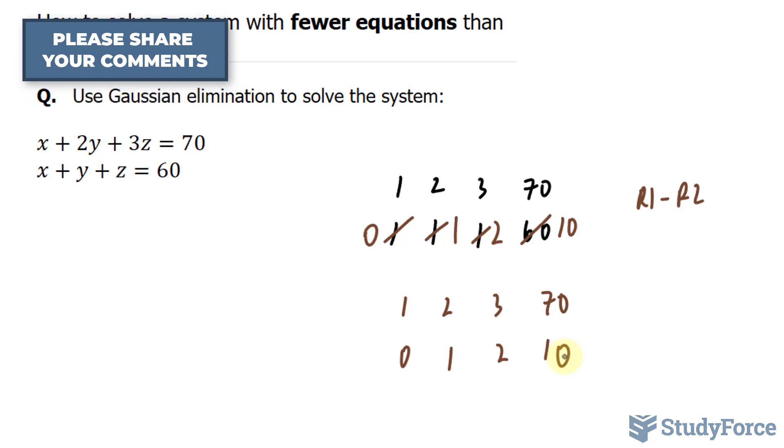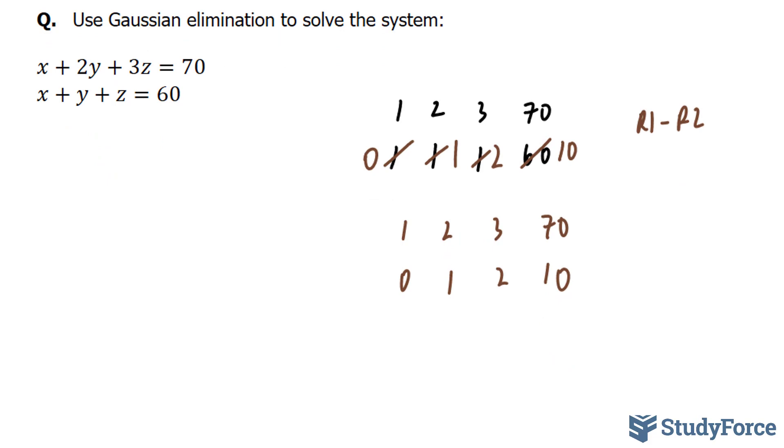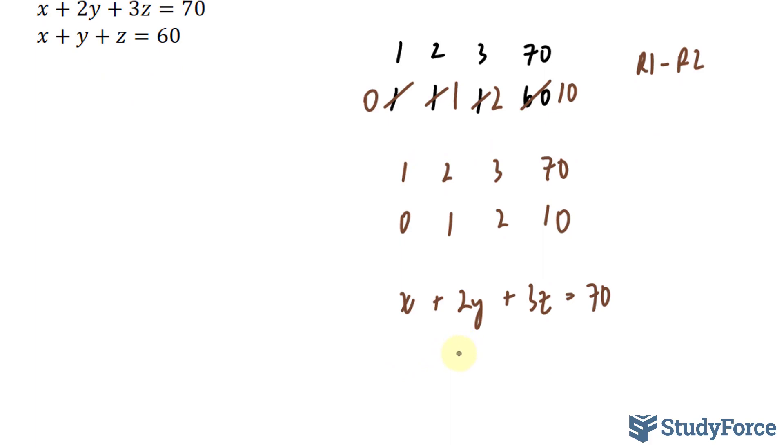Now that we have it in row echelon form, this matrix actually translates into the following system of equations. For the first row, we have x plus two y plus three z is equal to seventy. And for the second row, I have y plus two z is equal to ten.